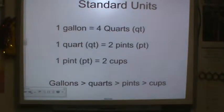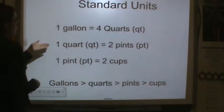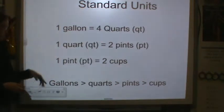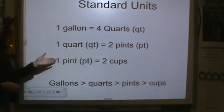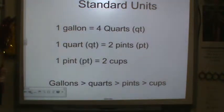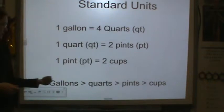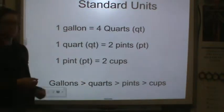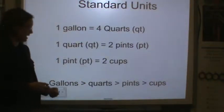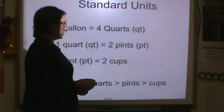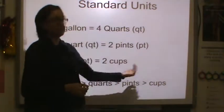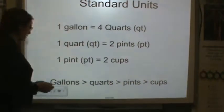I need you to copy this — standard units. One gallon is equal to four quarts. One quart is equal to two pints. One pint is equal to two cups. Therefore, gallons are greatest. Quarts are less than a gallon, pints are less than a quart, and cups are less than a pint.